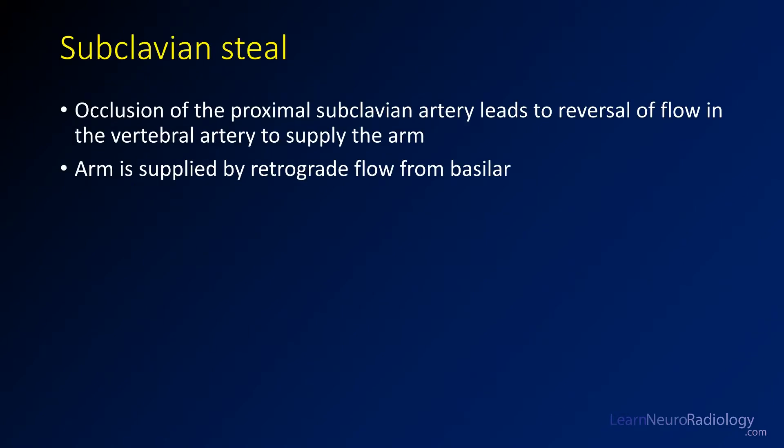What we have in this case is subclavian steal — an occlusion of the proximal subclavian artery leading to reversal of flow in the vertebral artery. You get reversal flow from the circle of Willis coming down to supply the arm, which then steals blood flow from the brain and can cause symptoms.